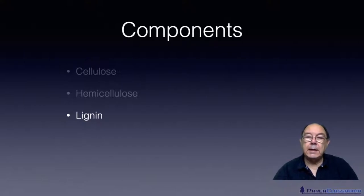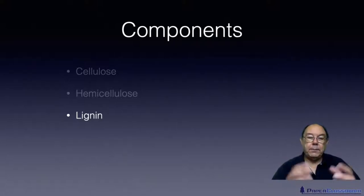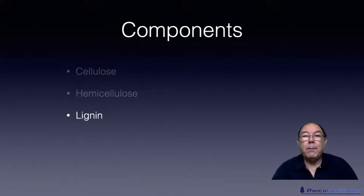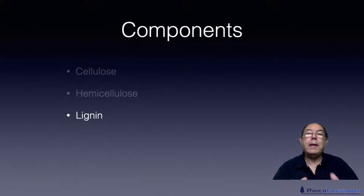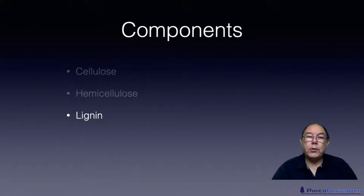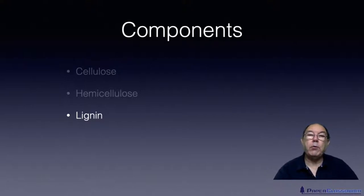Lignin is the glue that holds all the fibres together in the tree trunk or in the stalk of straw. To me lignin is a bit like a hot melt adhesive — when you heat it up it goes all pasty and gooey, and when you cool it down it becomes very hard and brittle. Lignin is also very hydrophobic, whereas cellulose is hydrophilic — it loves water. Lignin repels water.